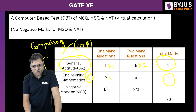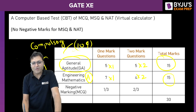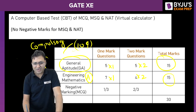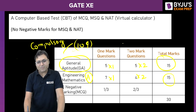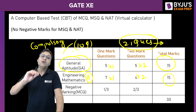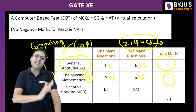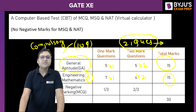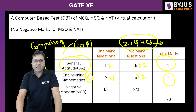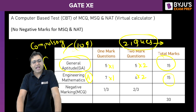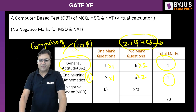Engineering mathematics will contain seven one-mark questions and four two-mark questions — that is 8 plus 7, making 15 marks and 11 questions total. So 10 plus 11 gives 21 compulsory questions for every student appearing for the engineering science paper. For MCQs, there is one-third negative marking for one-mark questions and two-thirds negative marking for two-mark questions.